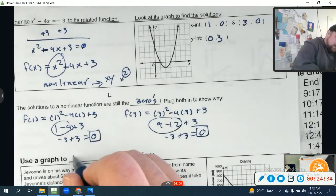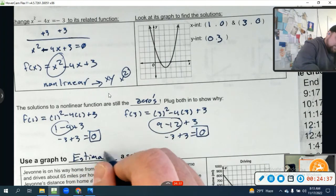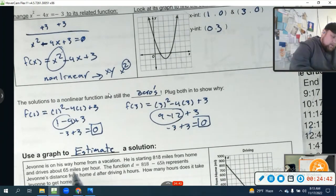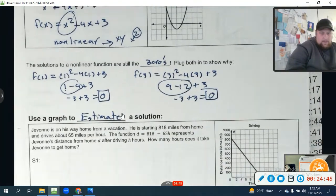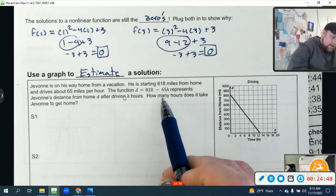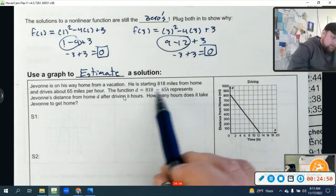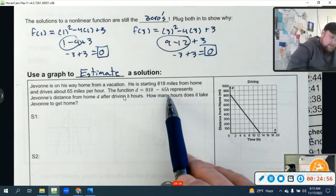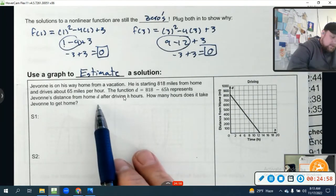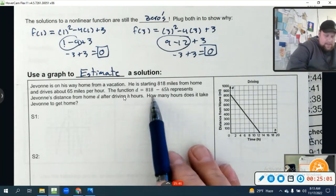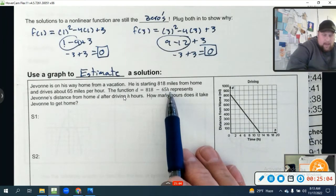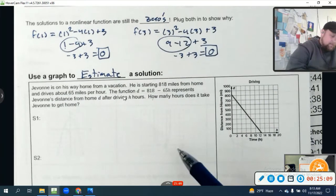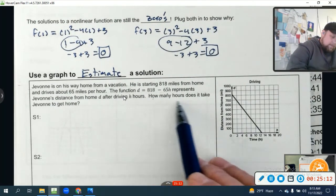Now we're going to use a graph to estimate a solution. Javon is on his way home from vacation. He is starting 818 miles from home and drives about 65 miles per hour. The function d = 818 - 65h represents Javon's distance from home d after driving h hours. That makes sense: multiply the speed times the hours, subtract that from the total mileage.